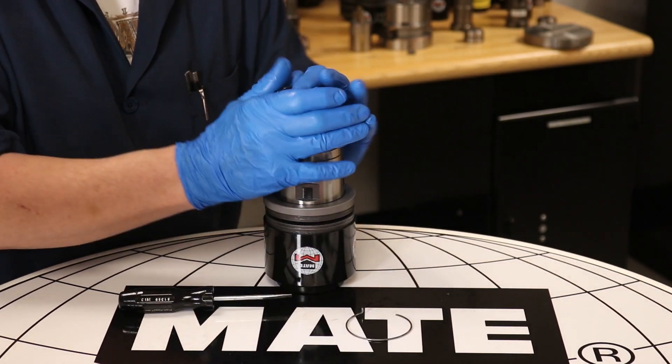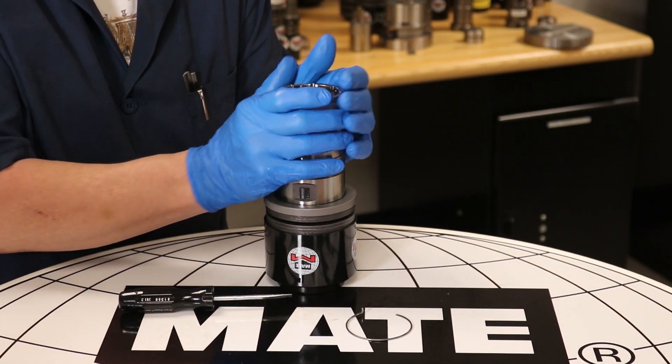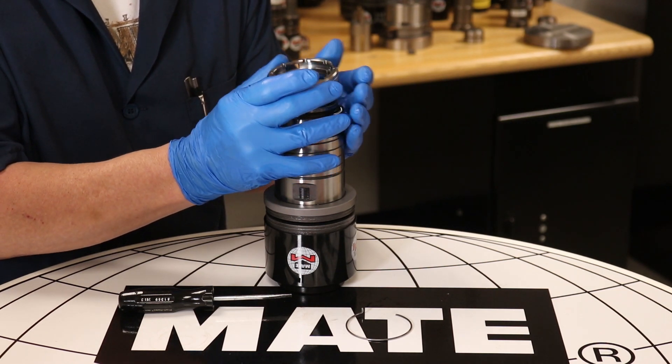Now we can remove the lock ring. While keeping pressure on the lock ring, push down and rotate clockwise to remove.